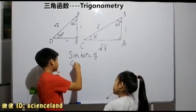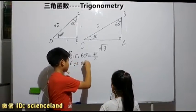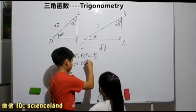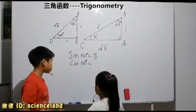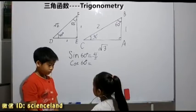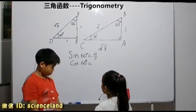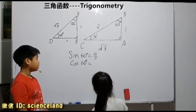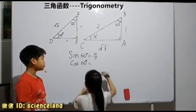Now we'll find cosine 60 degrees. Cosine is adjacent over hypotenuse. Yes, very good. Now we can find it, okay.